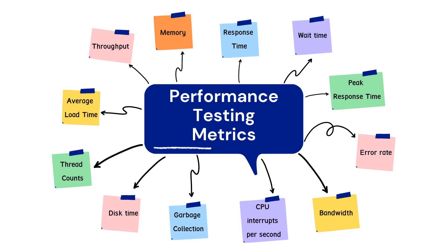A number of performance metrics or key performance indicators help an organization evaluate current performance. Common metrics include: throughput — how many units of information a system processes over a specified time; memory — the working storage space available to a processor; response time or latency — the time elapsed between a user's request and the start of a system's response; wait time or average latency — how long it takes to receive the first byte after a request is sent; and peak response time — the longest amount of time it takes to fulfill a request, which if significantly longer than average may indicate an anomaly.